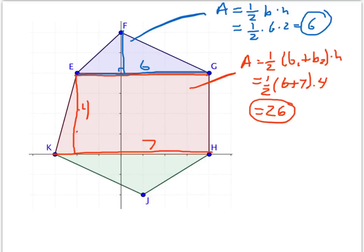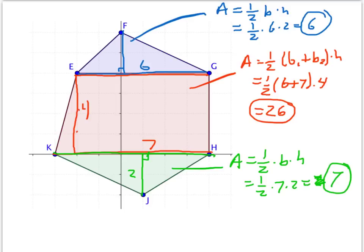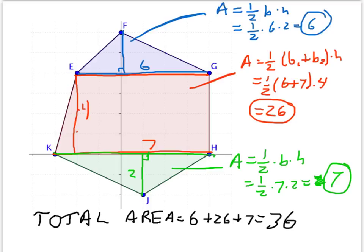And finally, the triangle down below. Again, area of triangle is half base times height. And if we consider seven as the base, and remember, base and height are perpendicular, so the height would be two. The area would be one-half times seven times two, which, of course, is just seven. And so the combined area is six plus 26 plus seven, which equals 39 square units.